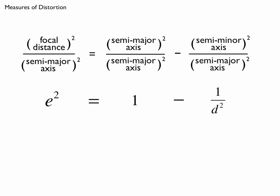And you'll notice that on the left-hand side you have the definition of E squared. The middle term, on the right of the equals sign, that's 1, and then the far right term is the reciprocal of the square of dilatation. So that's your relationship between eccentricity and dilatation. And you can use that to go back and forth.